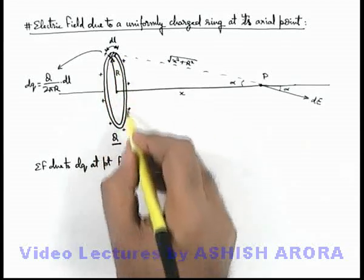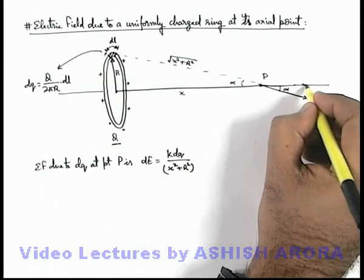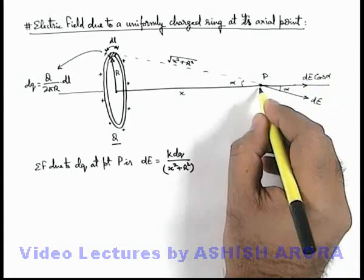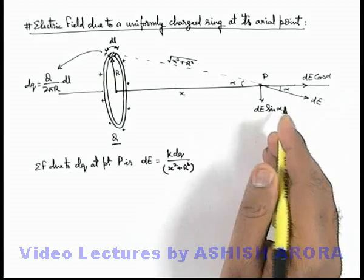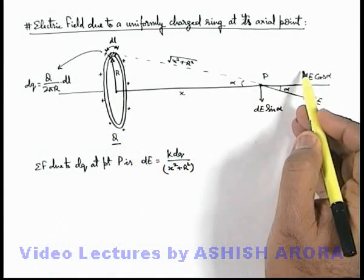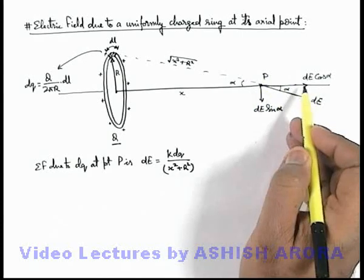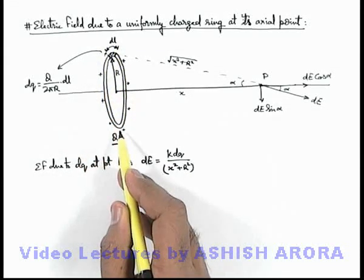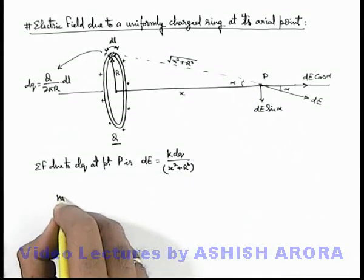If we integrate dq over the whole circumference of the ring, the direction of dE will change. So we resolve this electric field into two components: along the axis, which is dE·cos α, and perpendicular to the axis, which is dE·sin α. Corresponding to each element there is a diametrically opposite element for which dE·sin α is in exactly the opposite direction, so all dE·sin α components cancel out during integration. Therefore, the net electric field is due to the axial components only.